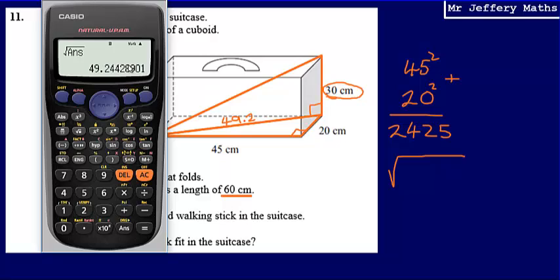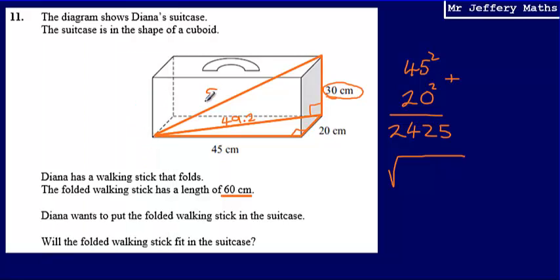So to work this out, I'm going to square 49.24. And again, I'm not going to use 49.2. I'm going to use this value that's in my calculator. So squaring that and then I'm going to add to that the square of 30. That gives me 3,325. And then I'm going to square root my answer. And that is going to give me 57 point, we'll call that 57.7.